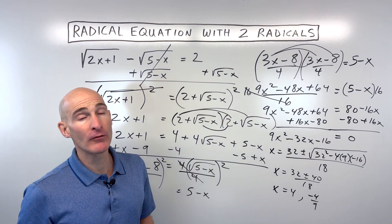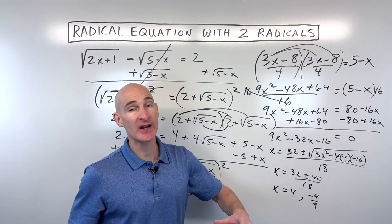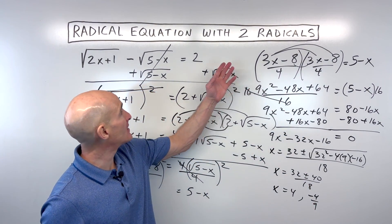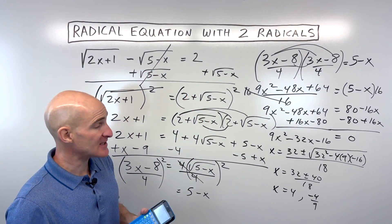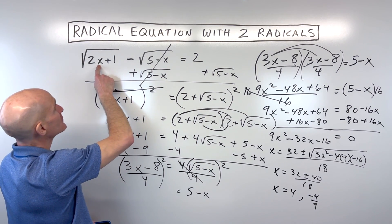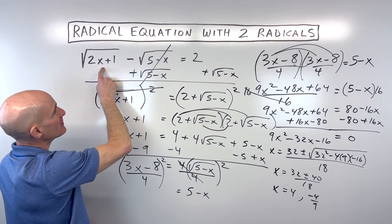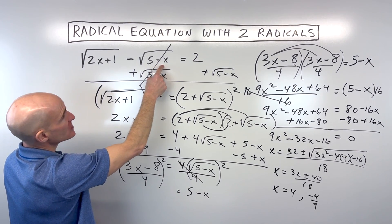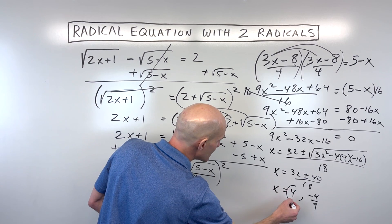With radical equations you must watch out for extraneous solutions. Take these answers and plug them back into the original equation. For x equals 4: 2 times 4 is 8, plus 1 is 9, and the square root of 9 is 3. Then 5 minus 4 is 1, and the square root of 1 is 1. So 3 minus 1 equals 2 — it checks out, so x equals 4 is a valid solution.